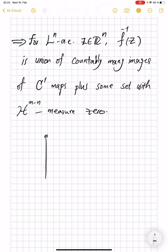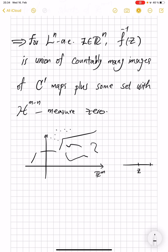So here will be a picture of roughly what is happening here. So for some z, the pre-image will have some countably many nice parts, but then there will be also bad parts.